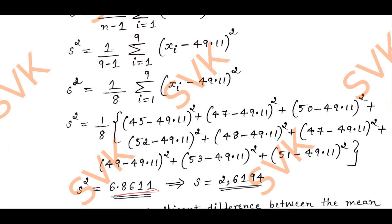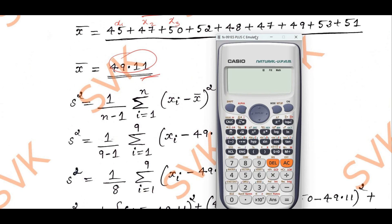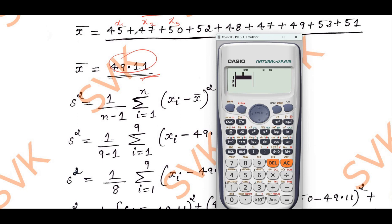After getting S², take the square root to get S = 2.6194. Now I will show how to calculate x̄ and S using a calculator. Press Mode or Setup, then take Stat, and select the first option: 1-variable. Enter all the values: 45, 47, 50, 52, 48, 47, 49, 53, 51 — that's 9 values. Then press AC.